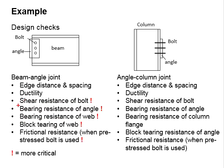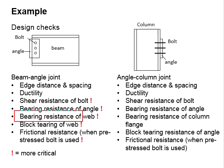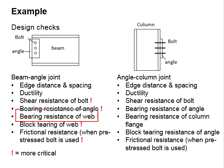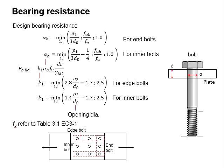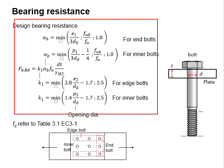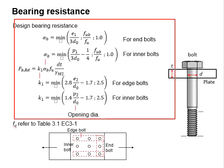In the case that you wish to check for both, it is up to you — you will eventually find that the bearing resistance of the web will be more critical. In this example, we will just check for the bearing resistance of the web, referring back to this formula.